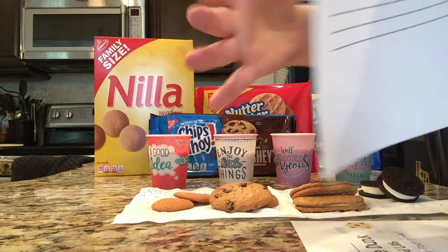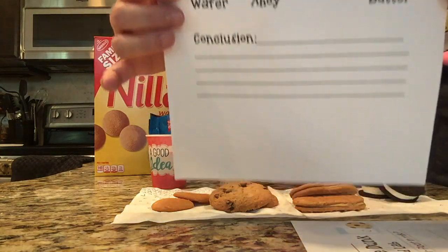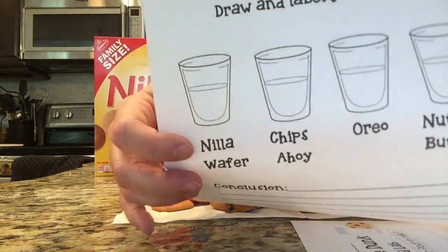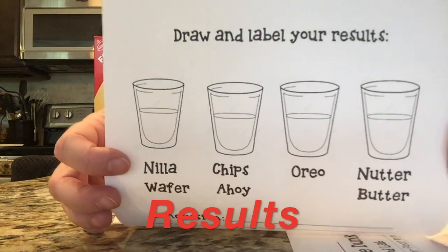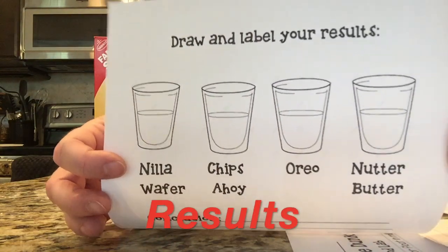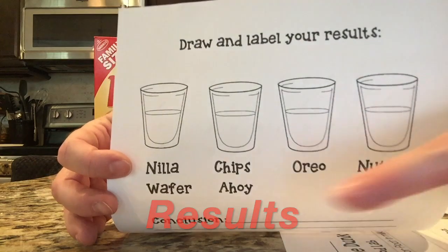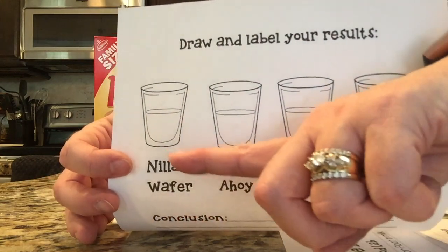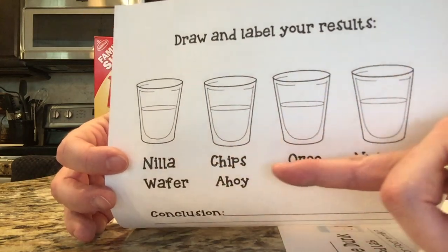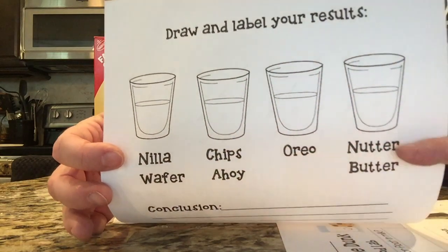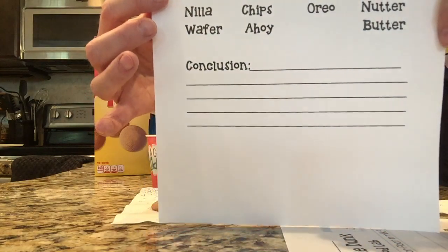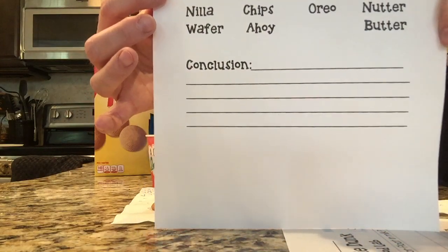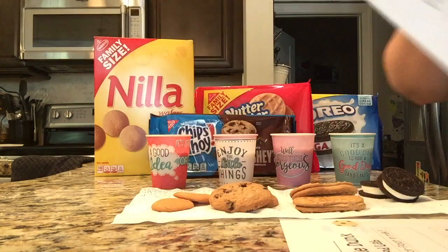On the second page, you're going to draw your results. So now you're going to draw each of your cookies in the glass of milk, and you're going to write your conclusion.